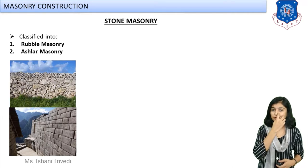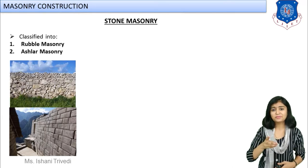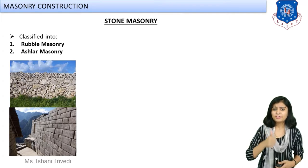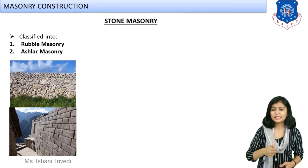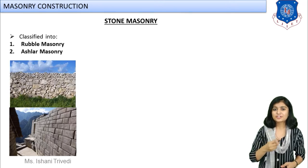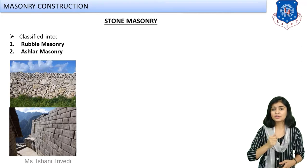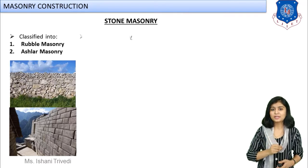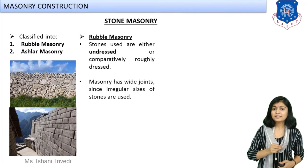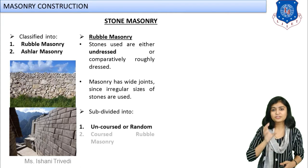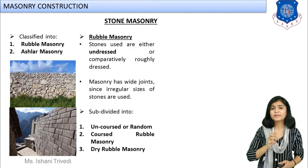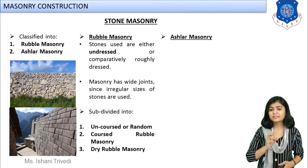So there is a difference between these two types of stone masonry construction. We are going to classify stone masonry construction into two different types: first we have rubble masonry, and second we have ashlar masonry. The first picture shows rubble masonry and the second shows ashlar masonry.